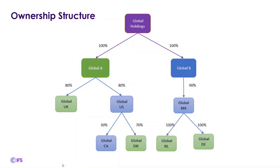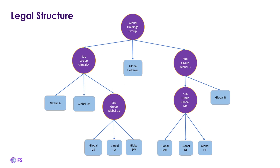Let's see how this works by taking an example. This is the ownership structure of a group of companies — let's call it Global Holdings. Global Holdings is a multinational company which has fully owned subsidiaries, sub-subsidiaries, and associate companies. The ownership structure is then maintained as the legal structure in IFS cloud. These purple color circles represent the subgroups within Global Holdings; the top circle represents the holding group which all other subgroups are connected to. This is the structure that will be maintained as the legal structure in the application.